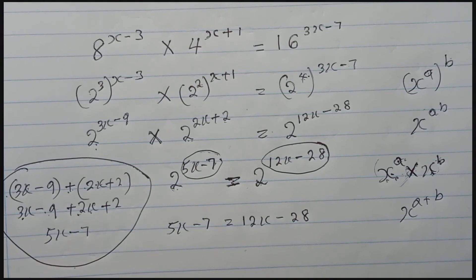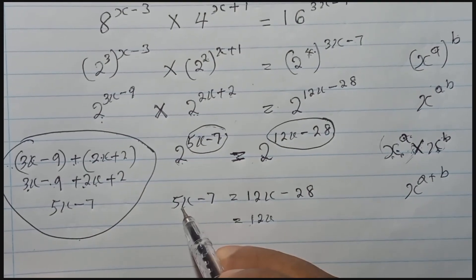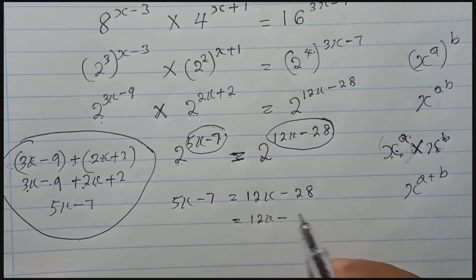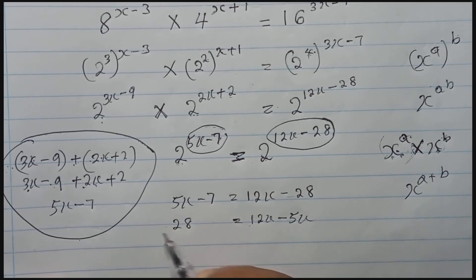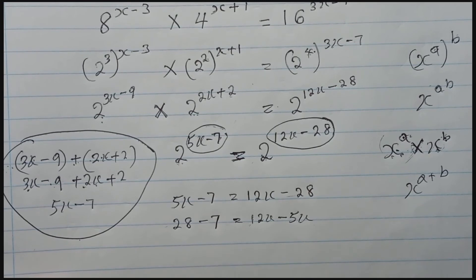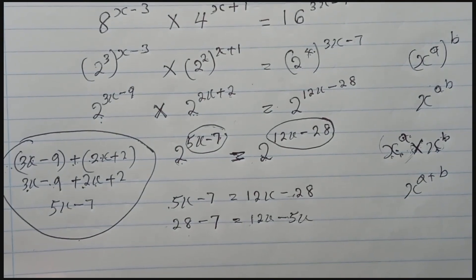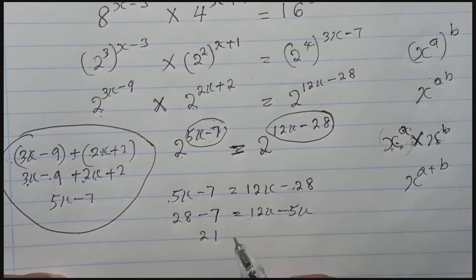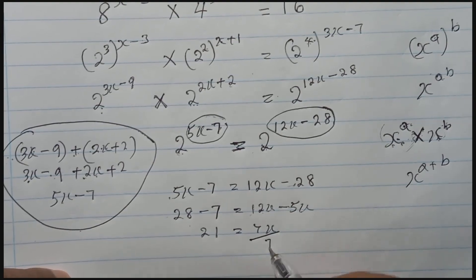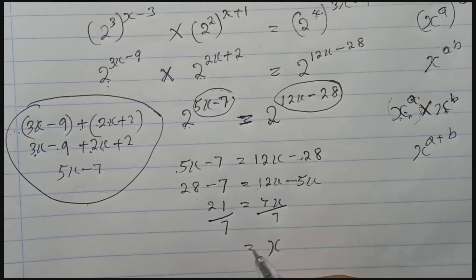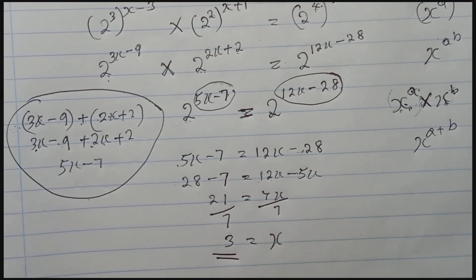Now we have a simple equation to solve. Bring x terms to one side and numbers to the other: bring 5x to the right gives minus 5x, and bring minus 28 to the left gives plus 28. So: 28 minus 7 equals 21, and 12x minus 5x equals 7x. Divide both sides by 7: x equals 21 divided by 7, which is 3. So the final answer is x equals 3.